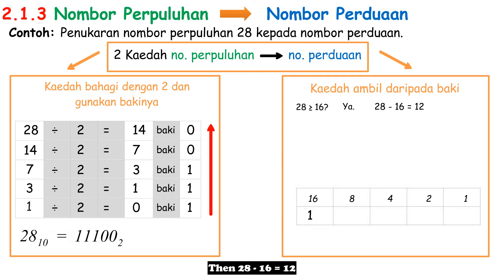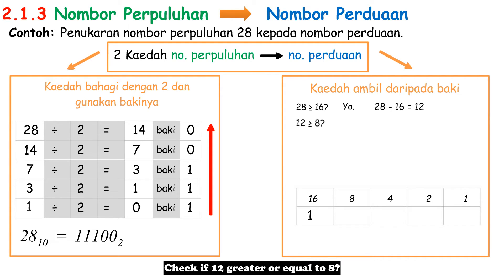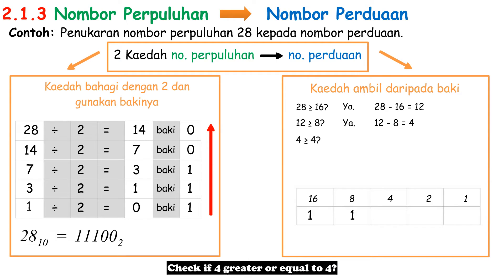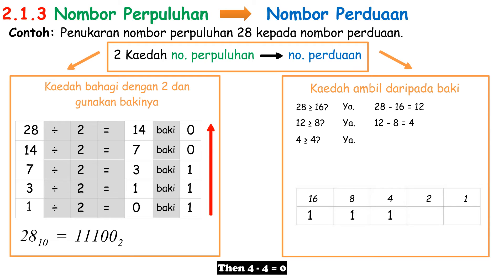28 minus 16 equals 12. Check if 12 is greater than or equal to 8 — yes, write 1 below the Nilai Tempat 8. Then 12 minus 8 equals 4. Check if 4 is greater than or equal to 4 — yes, write 1 below the Nilai Tempat 4. Then 4 minus 4 equals 0.